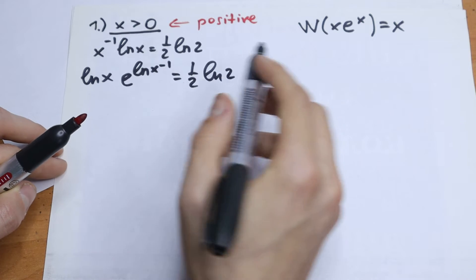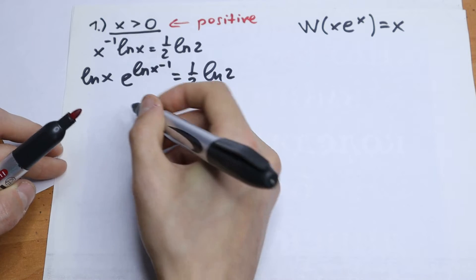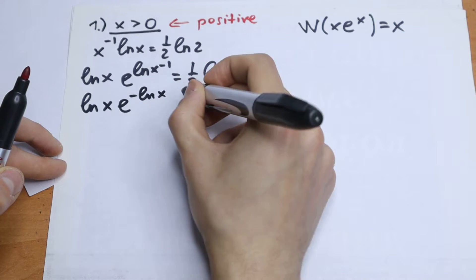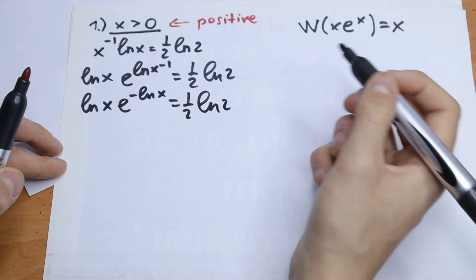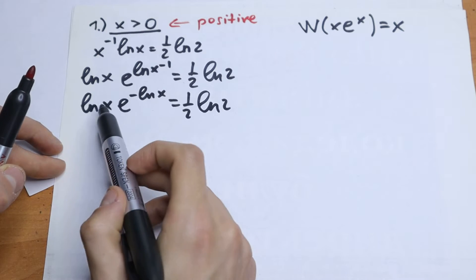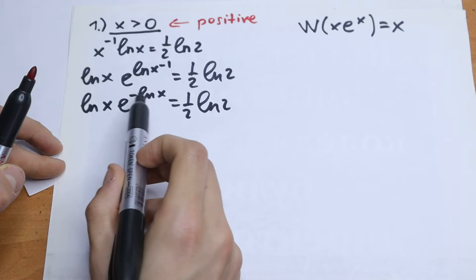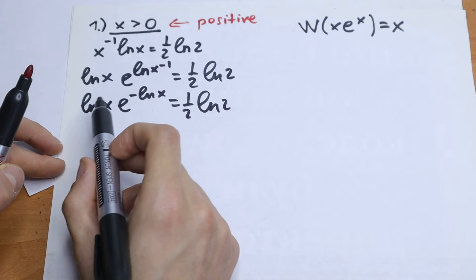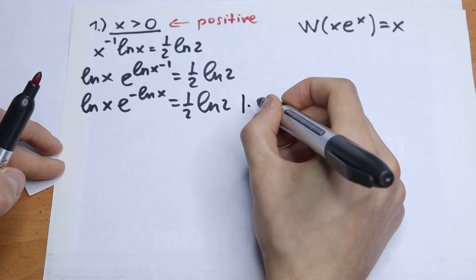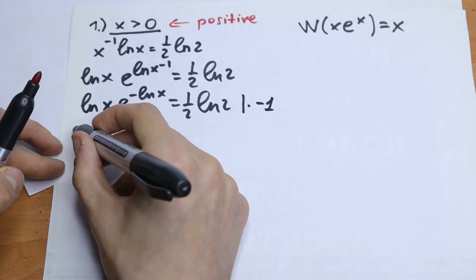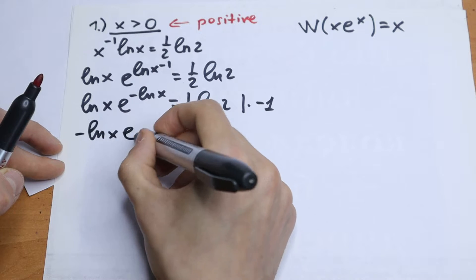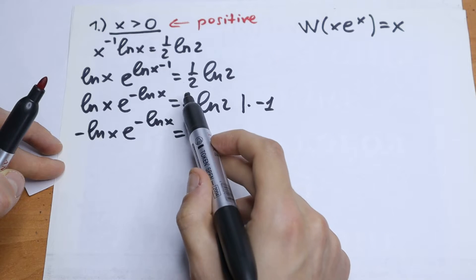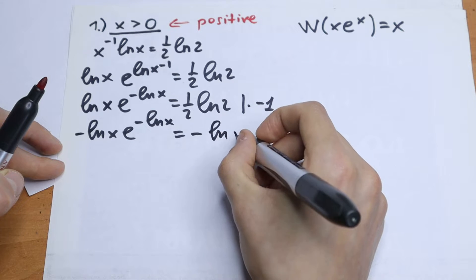We can bring the minus in front using log properties. We get natural log x times e to the power of minus natural log x, equal to one over two times natural log 2. We have e and we have matching x terms, but we need to multiply both sides by minus one to create the right sign pattern. We can rewrite one half times natural log 2 as natural log of square root of 2.